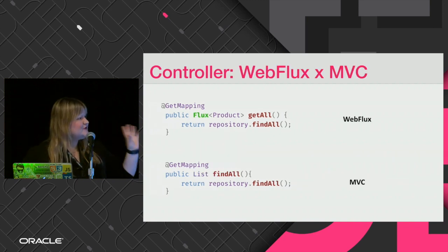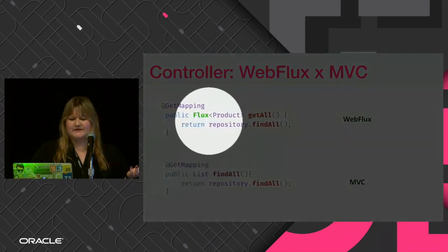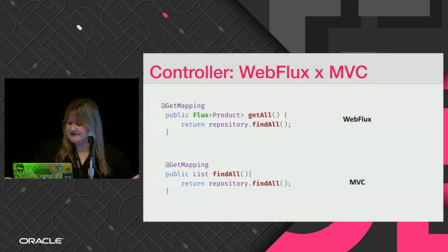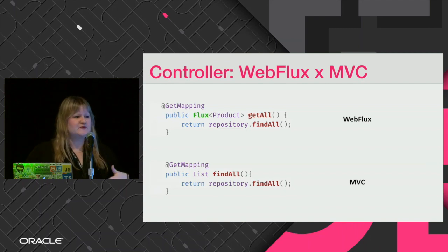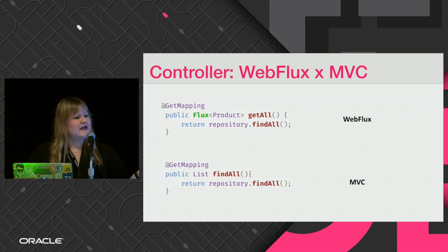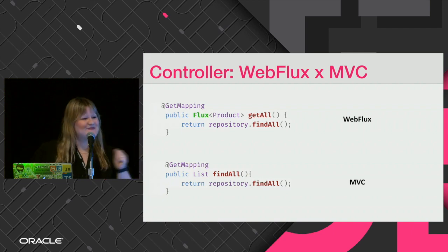If we compare the reactive way with the MVC way, you can see they are very similar. The only difference is in the signature and return type of the method — Flux versus List. And that's basically it. When you have all these methods, you'll have streams and can use all the operators to manage your information. If you want to start using reactive Spring today, you can leverage all your existing Spring MVC knowledge.